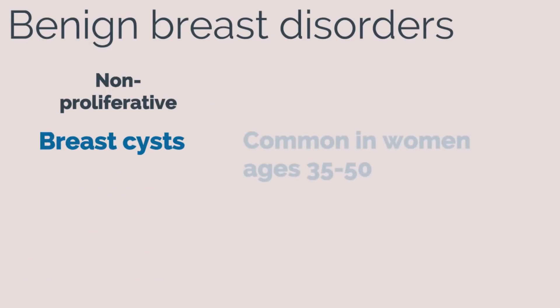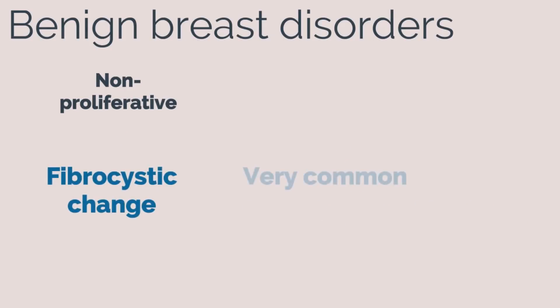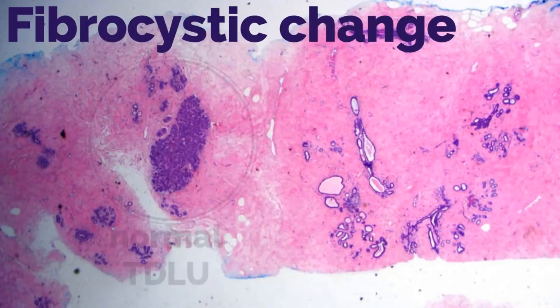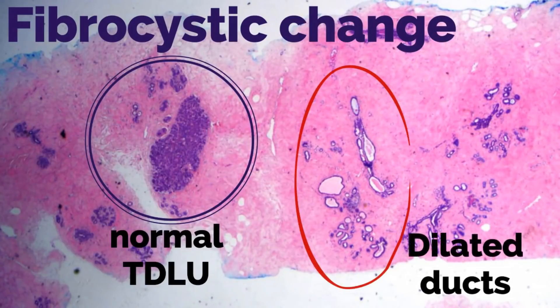Breast cysts are most common in women between the ages of 35 to 50. They are fluid-filled and round or ovoid in shape. Fibrocystic change is very common in reproductive-age women and can cause cyclic pain and palpably nodular tissue. With fibrocystic change, there is dilation of acini in ducts with dense stroma.